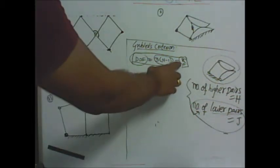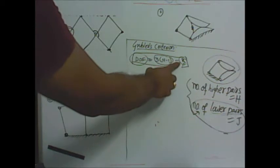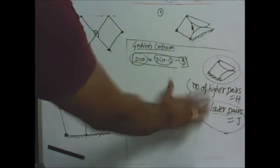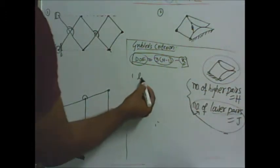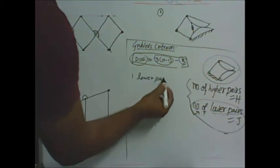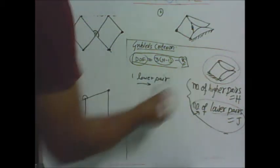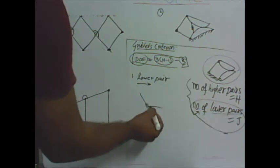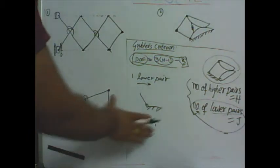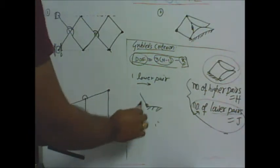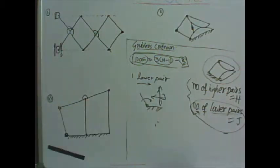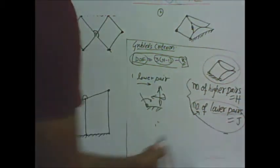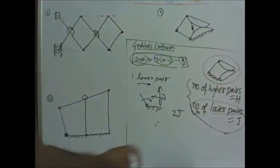The number of constraints is found from the total number of higher pairs and total number of lower pairs. For lower pairs, such as revolute joints, only rotation can happen — translations are abolished or eliminated. So two constraints exist for one lower pair, giving two j constraints when j lower pairs are present.